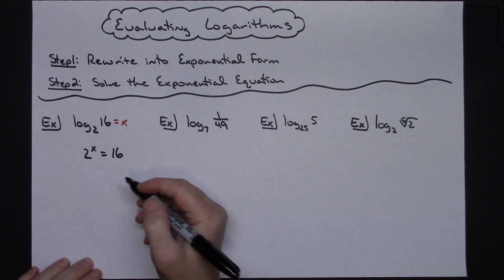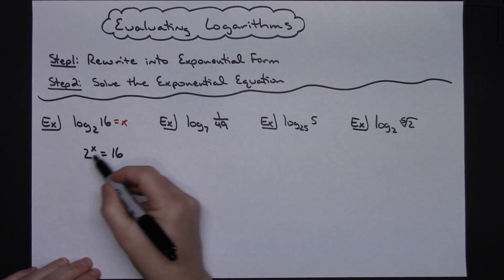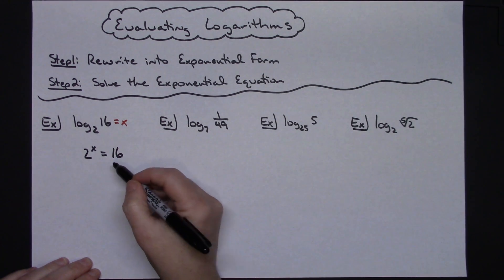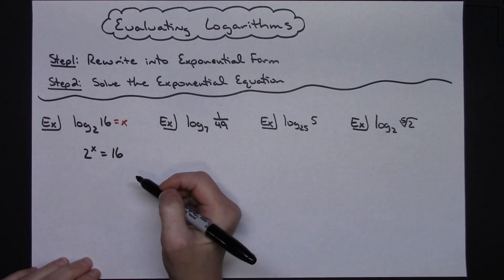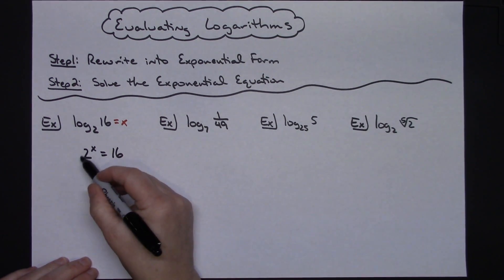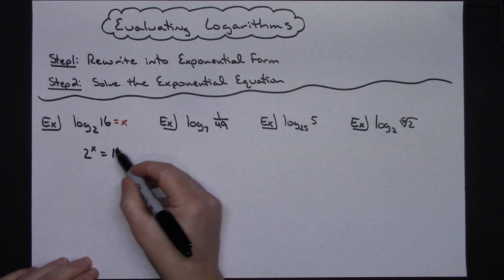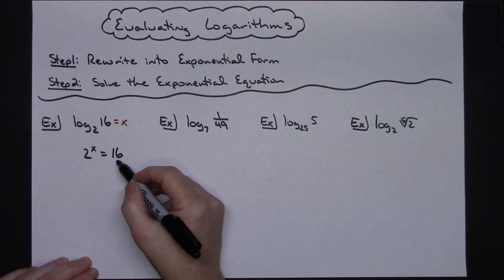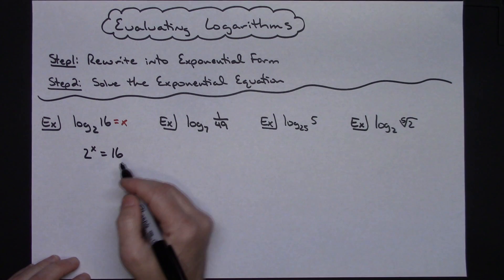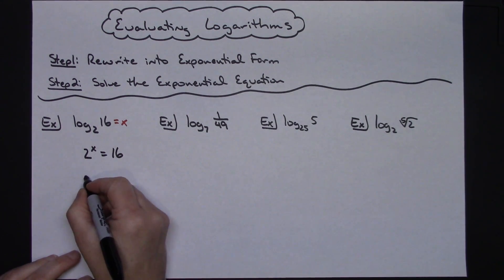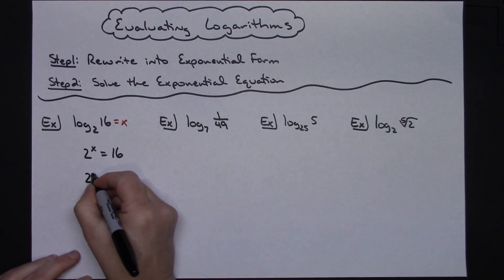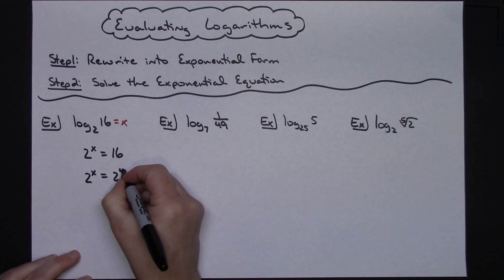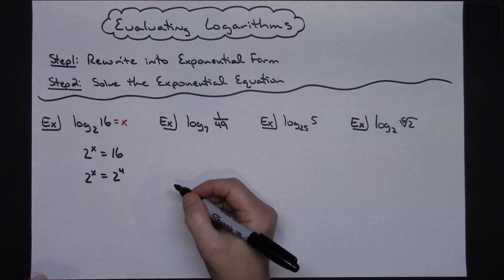Now a very common method: if I can get like bases, this is going to be an easy exponential equation to solve. I have a base of 2, and looking at 16 I can rewrite 16 so that it has a base of 2. So I'm going to go 2 to the x equals 2 to the 4th, since 2 to the 4th is 16.